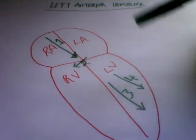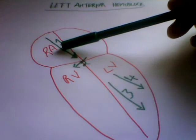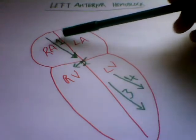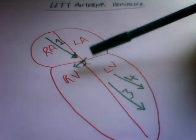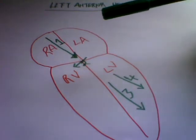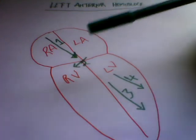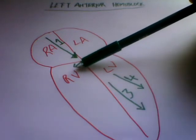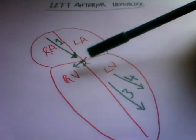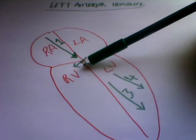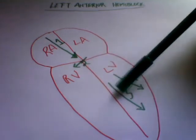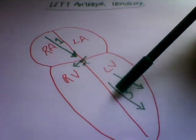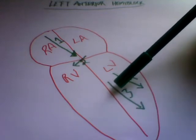To put it all together: vector one is represented on the ECG as a P wave because it is atrial depolarization. Vector two, depending on whether it goes towards a lead or away — if towards, it forms a low amplitude R wave; if away, a low amplitude Q wave. Vector three, if going towards a lead, will form a high amplitude R wave, but if going away from a lead it forms a deep S wave.